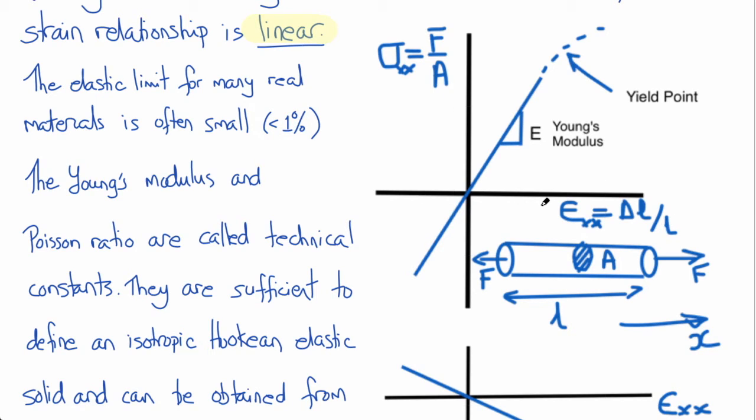If we plot the stress versus strain in a linearly elastic solid, we get a straight line for tension and compression within a certain range. And the slope of that straight line is called the Young's modulus, and it's a measure of the elastic stiffness of the material.